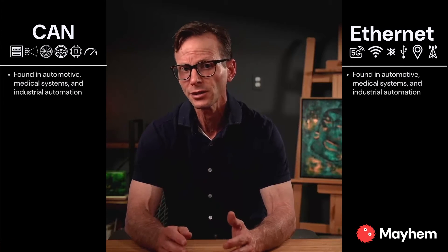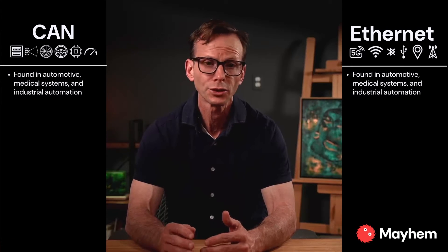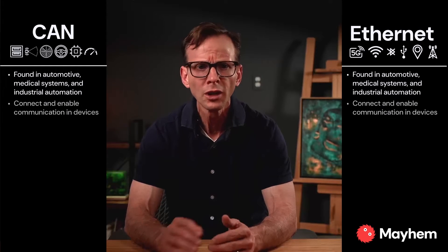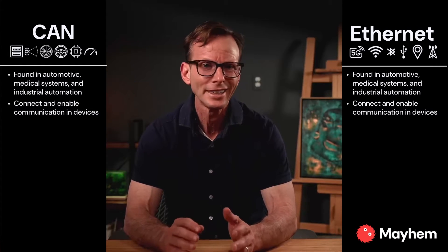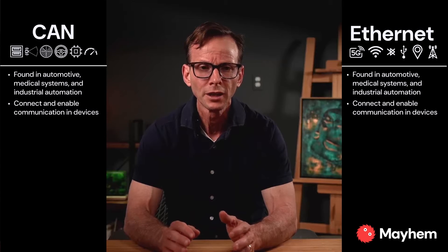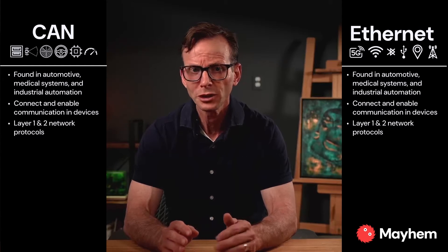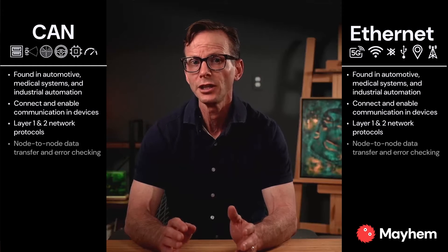You probably know Ethernet and might have heard cars use something called CAN, but do you know how they compare? Both CAN, the Controller Area Network Protocol, and Ethernet are found in settings such as automotive, medical systems, and industrial automation. They both achieve essentially the same goal: interconnecting different devices and enabling those devices to communicate. Both are also Layer 1 and 2 network protocols responsible for node-to-node data transfer and error checking.